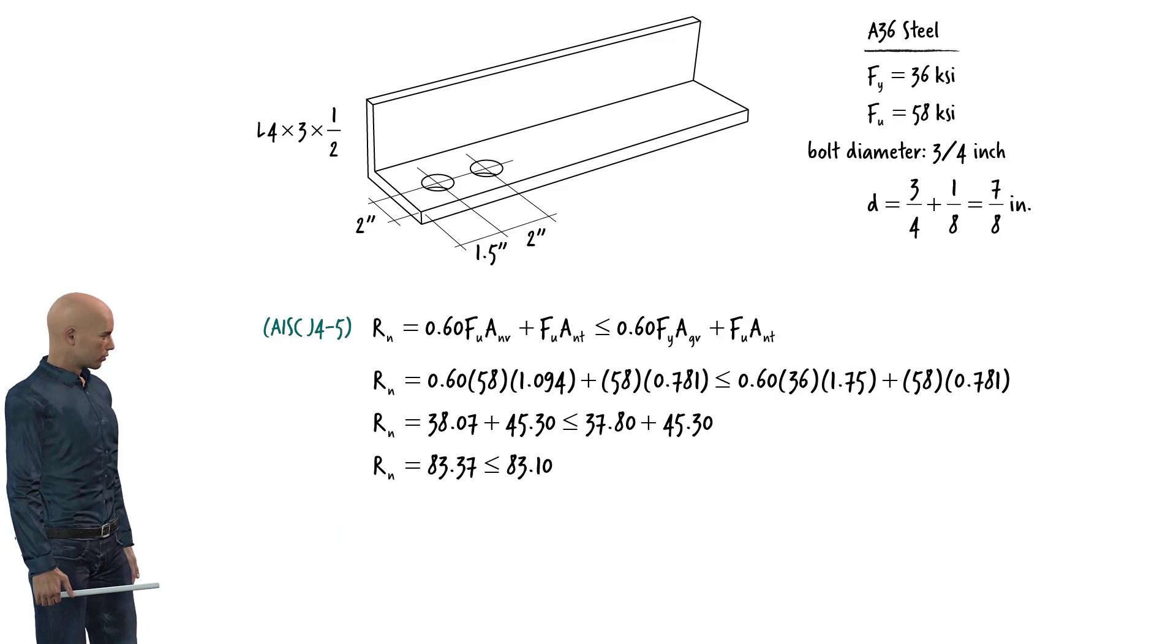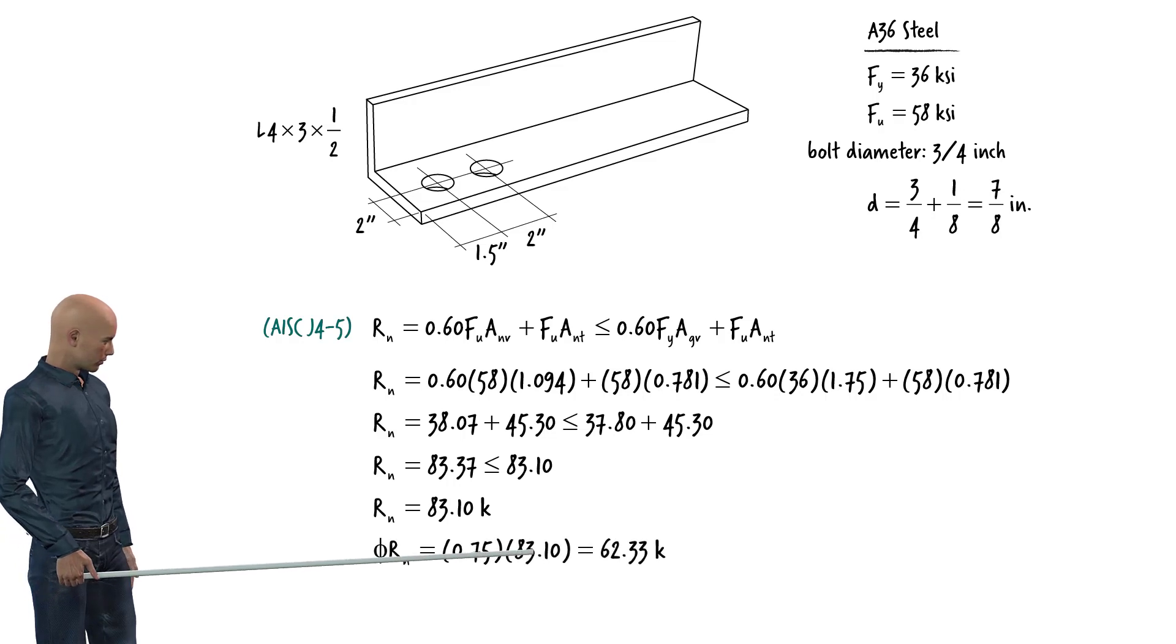Therefore, the nominal block shear strength equals... Multiplying this value by the resistance factor for block shear, we get... This is the design strength for block shear for our tension member.